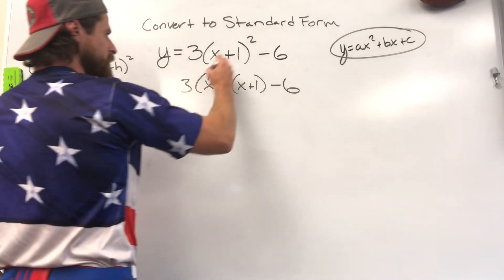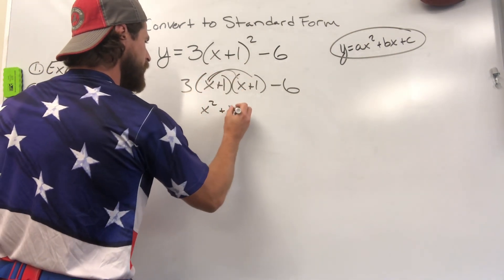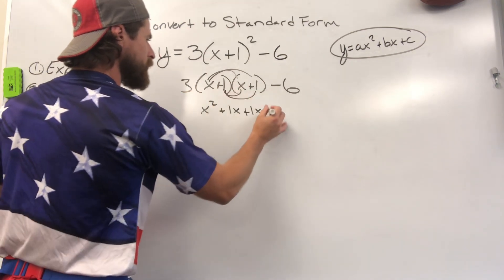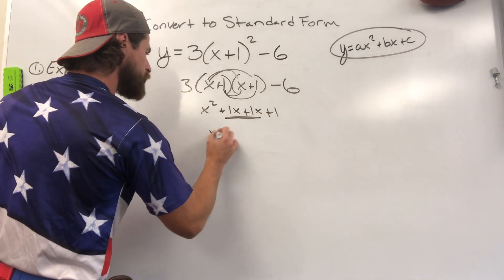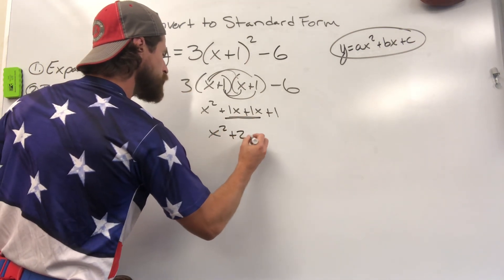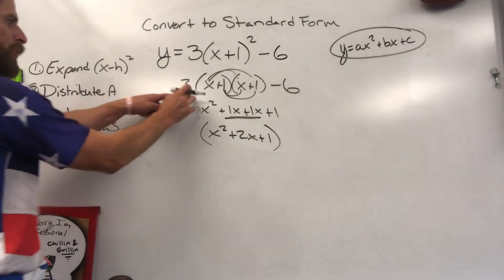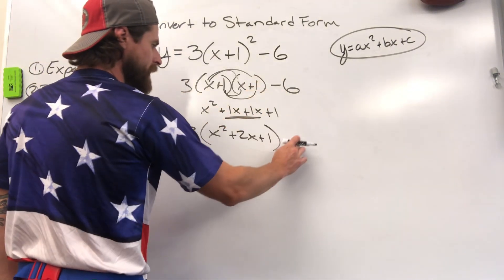Now the FOIL method shows us that x times x gives me x squared. x times one is going to give me one x. One times x is going to give me another one x. And one times one is going to give me one at the end. These two are going to combine together. So I now have x squared plus two x plus one all inside with three on the outside. Still got that minus six on the end.